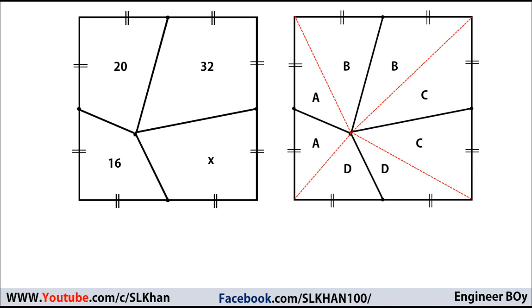Therefore, we can note that 16 which is A plus D plus 32 which is B plus C equals 48. And the same thing, we can say 20 which is A plus B plus X which is of course D plus C and that's our approach, and that is 20 plus X.